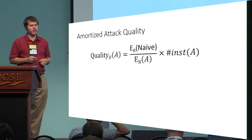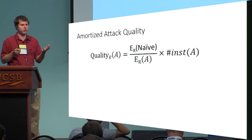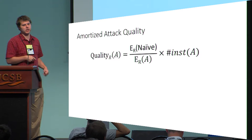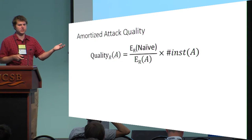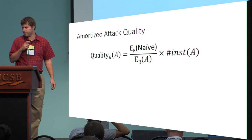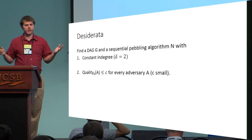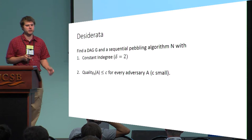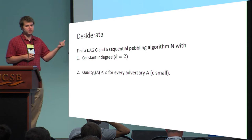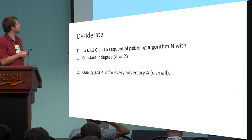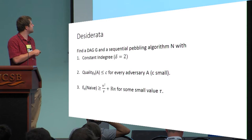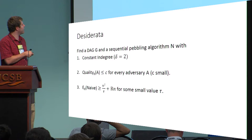We'll define attack quality: given an algorithm A that the adversary uses to evaluate this iMHF, attack quality is the energy cost of the naive algorithm divided by the energy cost of the adversary's algorithm, multiplied by the number of instances the adversary is computing. So if the adversary is computing 100 instances of this iMHF, we scale this by 100. The desirable goals for a data-independent memory hard function: we want a graph G with constant in-degree so we can actually apply the compression function, and we want to guarantee that for any adversary A the attack quality is small — at most C for some small constant C.